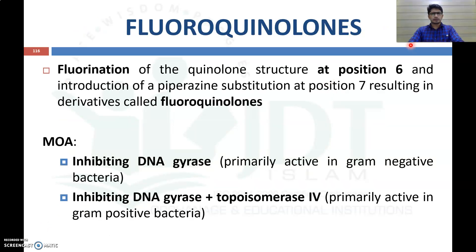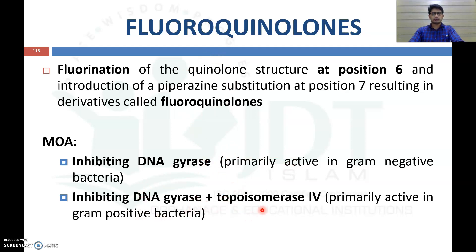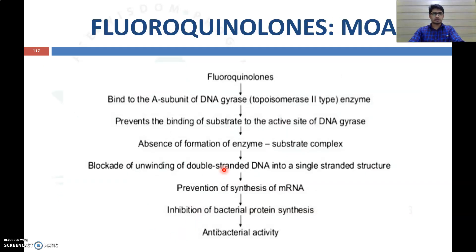Fluoroquinolones are formed by fluorinating the quinolone structure at position 6 and introducing a piperazine substitution at position 7. This structural change alters the mechanism of action and spectrum. Fluoroquinolones inhibit DNA gyrase in gram-negative bacteria, and due to fluorination they also inhibit DNA topoisomerase 4 found in gram-positive bacteria, resulting in a broad spectrum of activity.